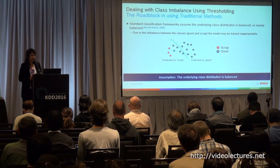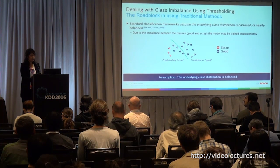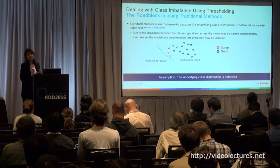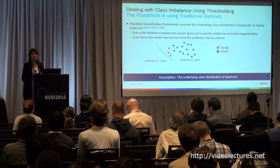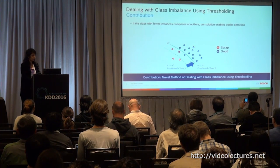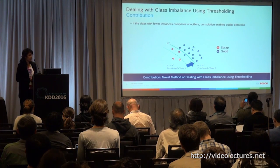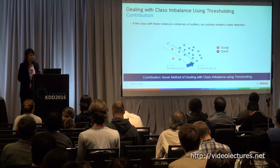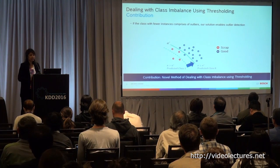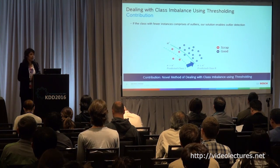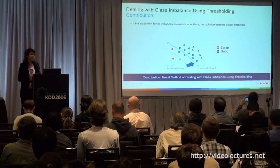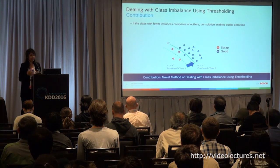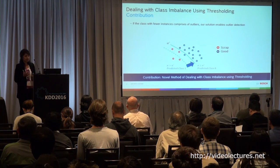Due to the imbalance of scrap, the model may not be trained properly. Even worse, the model may become trivial because everything can be predicted as the good part for our particular manufacturing example. We dealt with this problem by creating a novel method dealing with class imbalance using thresholding, which enabled us to detect outliers or the rarer class.